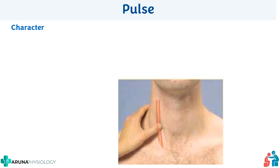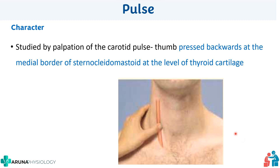To assess the character, we need a larger artery, most preferably the carotid artery. When palpating the carotid, use the thumb and ensure it does not cross the neck. The patient's right carotid should be felt with your left hand and vice versa. The character is studied by palpation of the carotid pulse at the medial border of the sternocleidomastoid at the level of the thyroid cartilage, with the thumb pressed backwards.